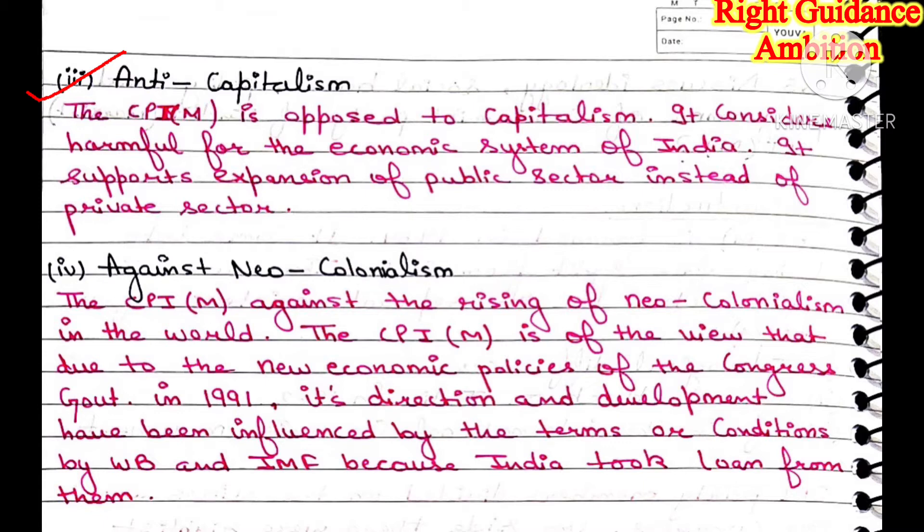CPIM supports the expansion of the public sector. They say that resources, taxes, and investment decisions should be in the hands of the government. That's why they give the public sector more importance over the private sector.